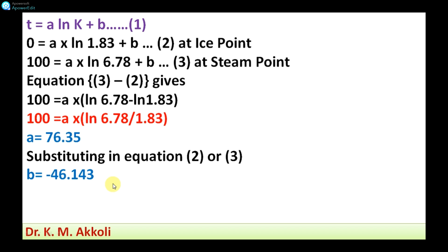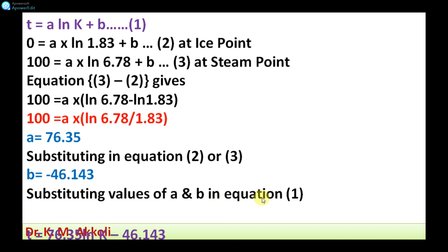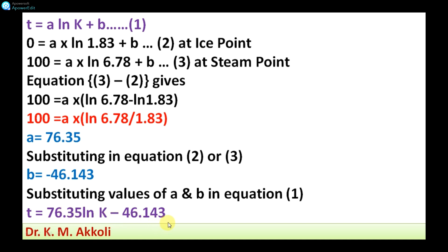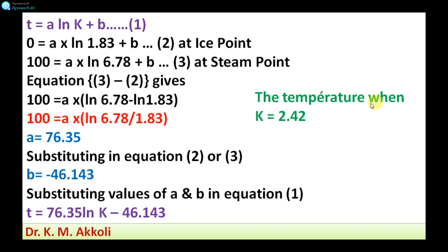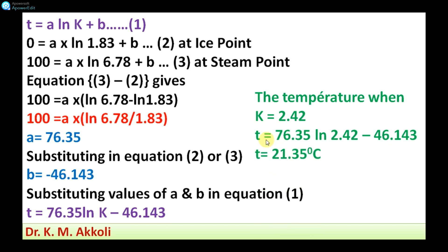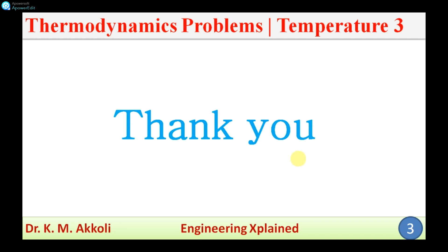Substituting the values of A and B into equation 1, we get the temperature distribution equation: T = 76.35·ln(K) - 46.143. When K is equal to 2.42, substituting into this equation and calculating, we get T = 76.35·ln(2.42) - 46.143, which gives T equal to 21.35 degrees Celsius. Thanks for watching — if you like, share, subscribe, and comment.